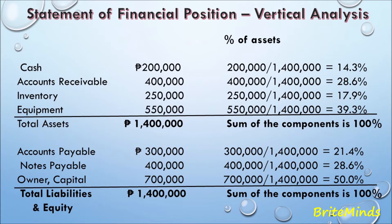The next line item is accounts receivable: 400,000 pesos divided by 1,400,000 gives 28.6%. Then inventory: 250,000 pesos divided by 1,400,000 total assets gives 17.9%. Next is equipment: 550,000 pesos divided by 1,400,000 pesos gives 39.3%. The sum of cash, accounts receivable, inventory, and equipment gives a total of 100%.